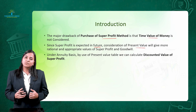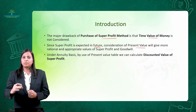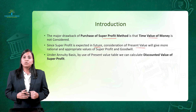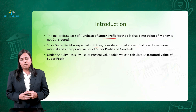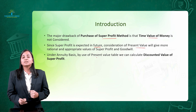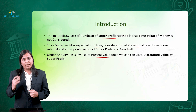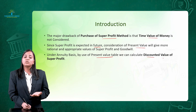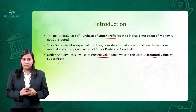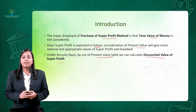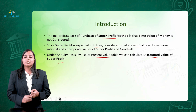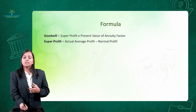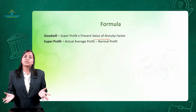In the super profit method, we used to multiply it with the number of years of purchase. The only change in this method is that instead of multiplying super profit with number of years of purchase, we will be multiplying it with the present value factor. This present value factor is derived from the present value table, which will be readily given to you — also known as the discounted value of super profit. The formula is: goodwill equals super profit multiplied by present value of annuity factor.